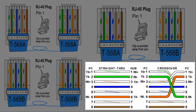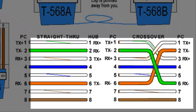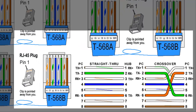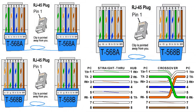The crossover cable has the A standard layout on one end and the B standard layout on the other end. One end is straight-through and the other is crossover, meaning each cable crosses over. The green wire crosses over from TX pin 2 to RX pin 6, and the orange crosses over from pin 6 to pin 2 TX. The only difference is that one end has the A standard layout and the other has the B standard layout.